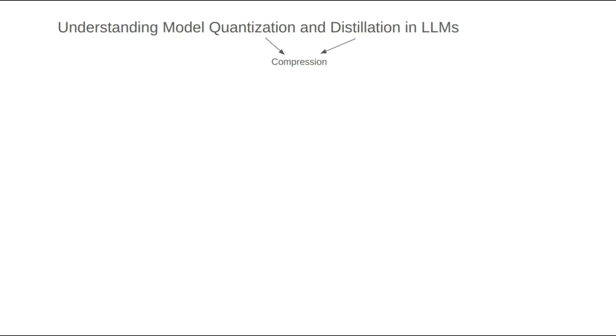First, let's talk about quantization. To understand quantization, we need to recognize that large language models consist of many parameters. For example, GPT-3 has over 100 billion parameters. Each parameter can be thought of as a value, such as 1.2768.